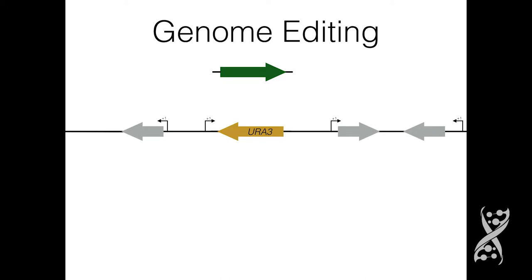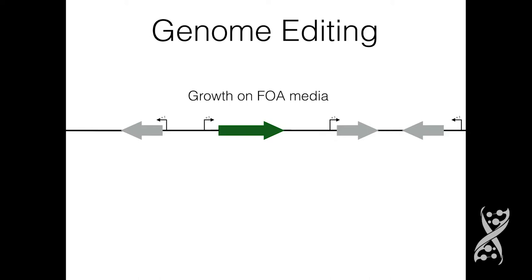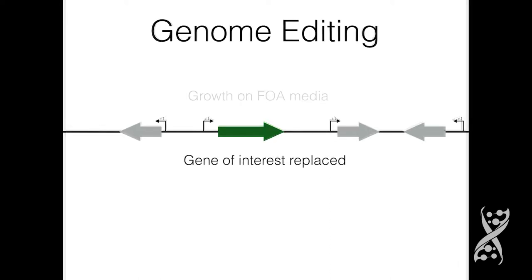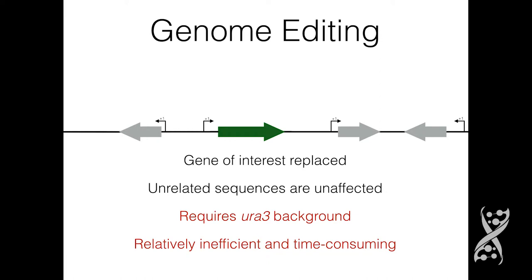Once this intermediate strain is recovered on URA3 media, the transformation is repeated, this time trying to replace the URA3 allele with a sequence that you actually cared about. This could be selected for, or counter-selected, on a drug called 5-fluoroorotic acid, or FOA media. The end result is that your gene of interest is replaced with very little to no effect on the surrounding sequences.